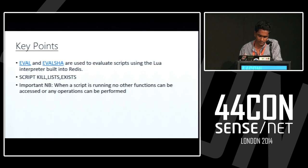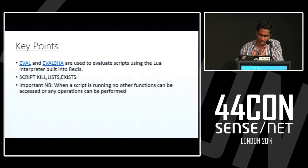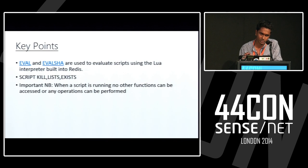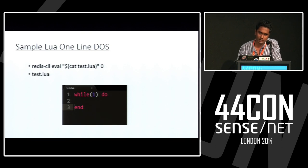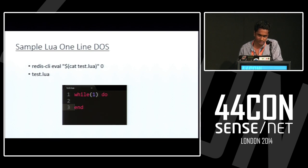SCRIPT LIST and SCRIPT EXISTS are APIs within Redis used to check whether a script exists or not, list whether any script is running, and SCRIPT KILL kills the current running script. An important point: when a script is running, no other functions can be accessed or operations performed — this is a kind of denial of service. If you run a script within the Redis platform, no other user will be able to access the database or extract resources from it. Since scripting was introduced, this is a one-line denial of service attack — as soon as you run the script, the Redis server crashes since it keeps on evaluating indefinitely.